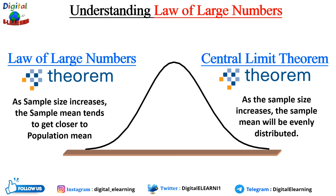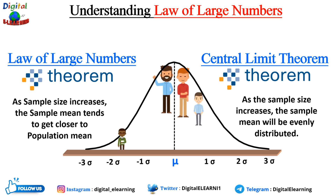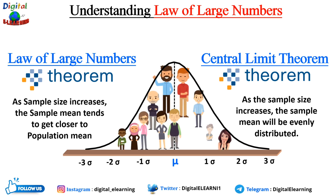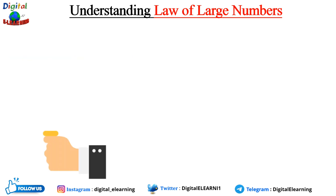Even if individual variables are not normally distributed, the distribution of the sum or average will tend toward the bell-shaped normal distribution as sample size increases. Therefore, the Law of Large Numbers relates to the peak — the mean of the curve — while the Central Limit Theorem relates to the distribution of the curve. In simple terms, the Law of Large Numbers focuses on convergence of the sample mean to the population mean, while the Central Limit Theorem deals with convergence of the distribution of the sample mean to the normal distribution.